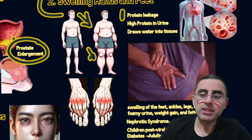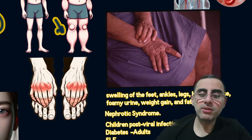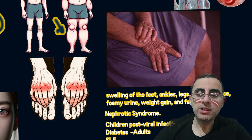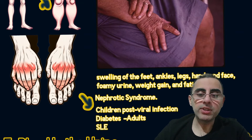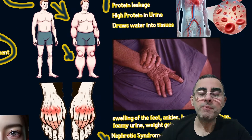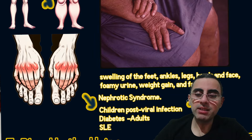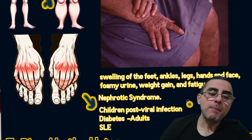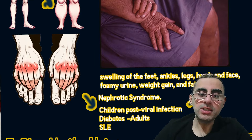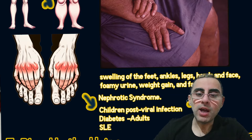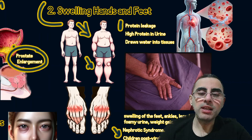The most common cause of swelling in the hands and feet is nephrotic syndrome. In children, nephrotic syndrome is usually caused by viral or post-viral infection, and in many cases it is reversible. But in adults, it is usually caused by diabetes, autoimmune diseases such as systemic lupus erythematosus, amyloidosis, or other conditions, and it is much more serious in adults.